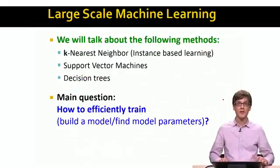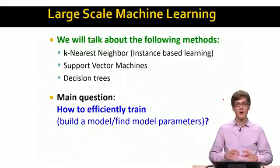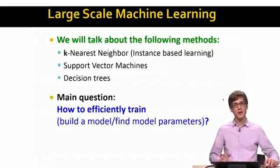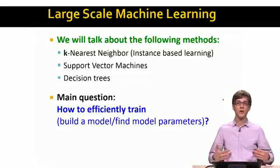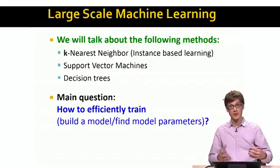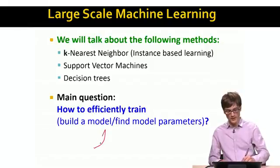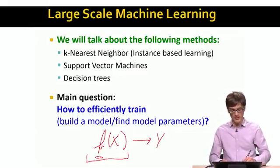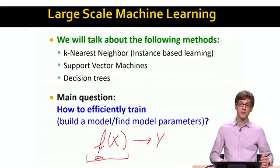So in this module, we will talk about several different machine learning methods, where we will be kind of focusing on large scale data. In particular, we will talk today about k-nearest neighbor, which is a method in a class of instance based learning. And then we will also talk about support vector machines and decision trees. And kind of the main question when working with machine learning methods is, how do we efficiently train or build a model based on the data? So in a sense, the main question that arises in machine learning is, how do I find this function f that takes the input features and predicts the class variable. So learning or estimating this function f is the hardest part of machine learning.